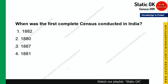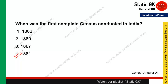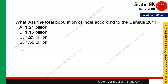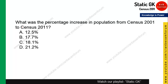Question 3: What was the total population of India according to Census 2011? As covered in the first pointer, the answer is 121 crore, i.e., 1.21 billion — option A is correct. Question 4: What was the percentage increase in population from Census 2001 to 2011, i.e., the decadal growth rate? It is approximately 17.63%, so option B is the right answer.